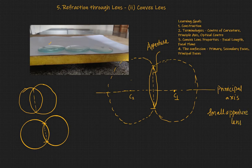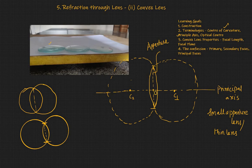That means that these lenses won't be very thick — they would be very, very thin. So we say small aperture lenses, or we say thin lenses. We have looked into center of curvature, we have looked into principal axis, and this point O is called the optical center. These are the terminologies you should know for a convex lens.